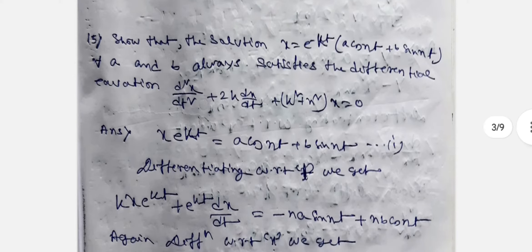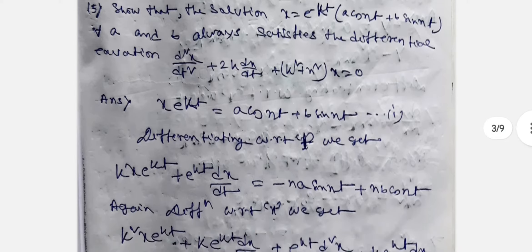Next question: Show that the solution x = e^(-kt)(a cos(nt) + b sin(nt)) for all A and B satisfies the differential equation d²x/dt² + 2k dx/dt + (k² + n²)x = 0.